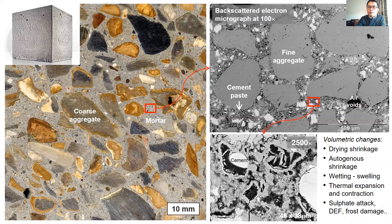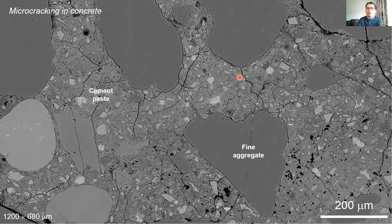In the majority of cases, the volume changes occur within the cement paste itself at the micro scale — usually the cement paste shrinks or expands. When the volume changes are restrained by rigid inclusions such as coarse and fine aggregates, or restrained by other parts of the structure changing at different rates, this produces local tensile stress concentrations that can lead to very fine, random, and closely spaced microcracking, such as those shown in this backscattered electron micrograph taken from an actual structure that suffered severe degradation after only several years of operation. One can see that microcracks occur mainly within the cement paste, where in this case it is expanding but restrained by the aggregate particles.